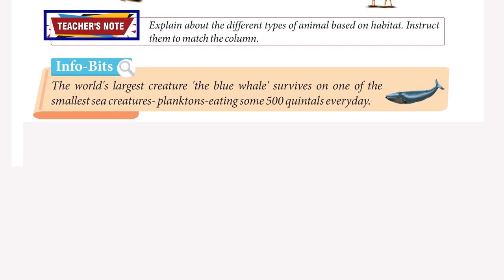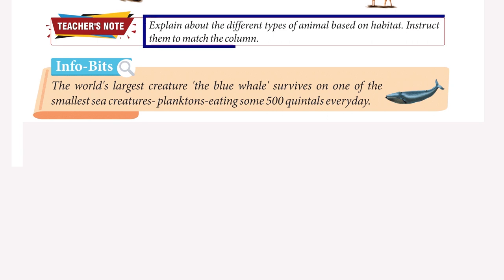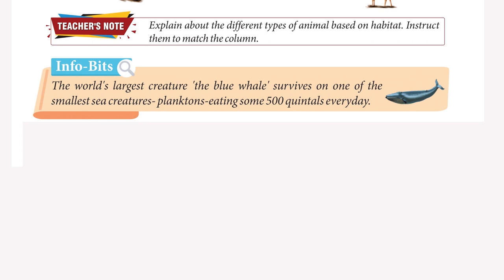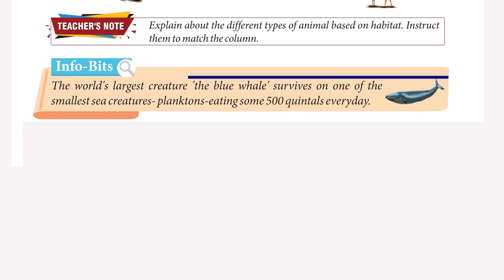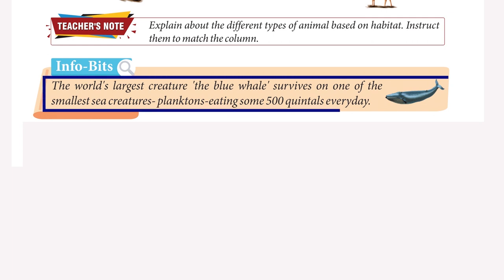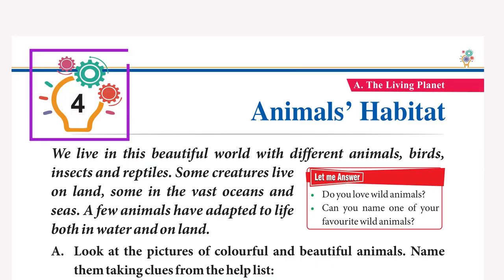Teacher's Note: Explain about the different types of animals based on habitat. Instruct them to match the columns. Info Bits: The world's largest creature, the blue whale, survives on one of the smallest sea creatures — planktons — eating some 500 quintals every day.